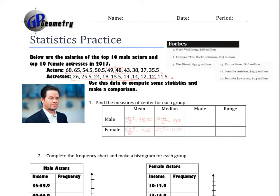The mode means the value that repeats. For the male actors, none repeat, so there is no mode. For the female actresses, we notice that 12 repeats twice and 14 repeats twice, so we have two modes: 12 and 14.